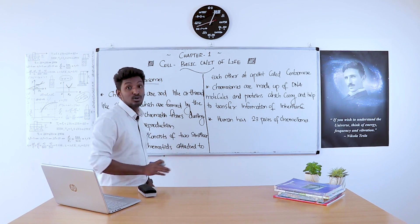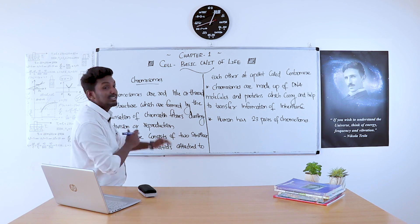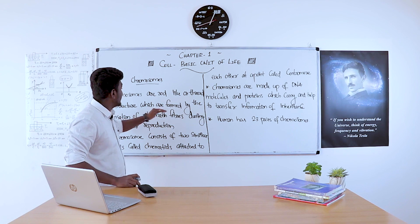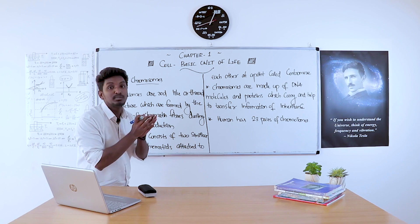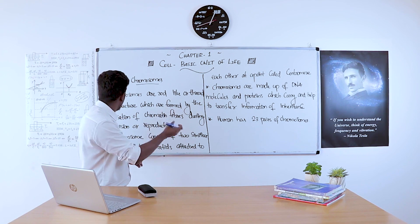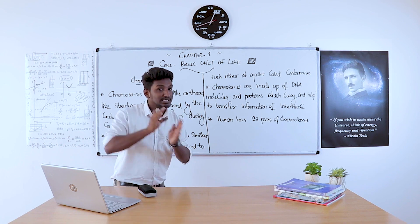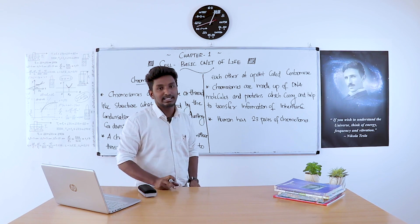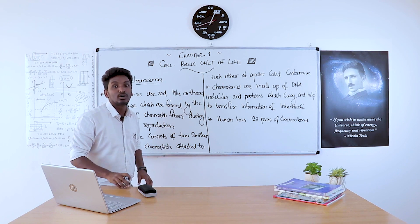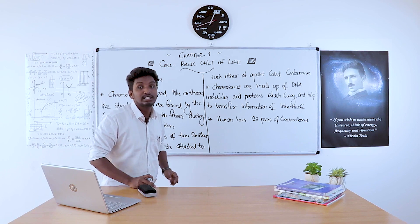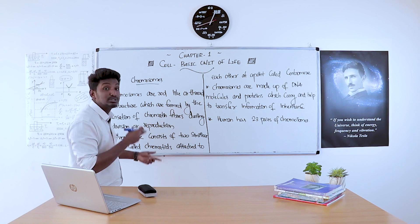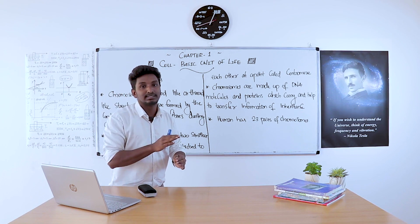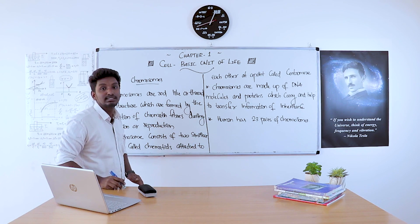The next organelle is the chromosome. Chromosomes are rod-like or thread-like structures formed by the condensation of chromatin fibers during cell division or reproduction. A single chromosome consists of two similar threads, and those two similar threads are known as chromatids.